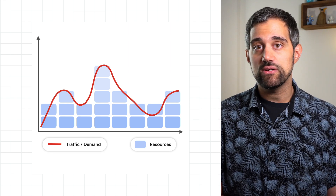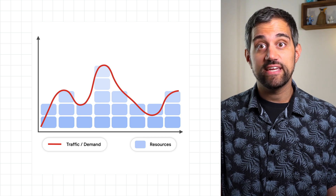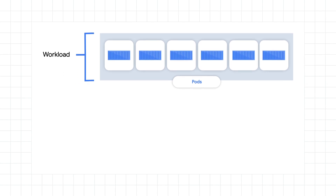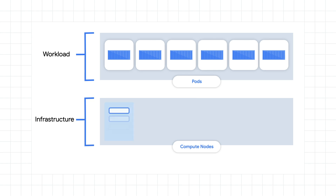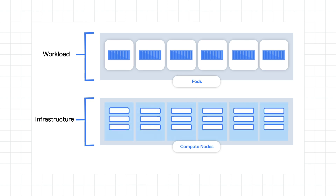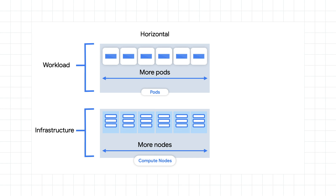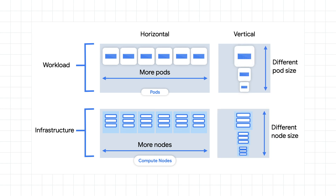In order to understand how you should configure auto-scaling, let's simplify everything into workloads and infrastructure. Workloads are made up of pods, which are running containerized applications. Infrastructure is made up of nodes, which are responsible for the actual resources like computing capacity and memory. For each of these, there's also two ways to scale: horizontally or vertically. Horizontal scaling is done by adding more pods or nodes. Vertical scaling is done by making pods or nodes bigger — when demand increases, a larger pod or node may be able to reduce the burden by handling more.